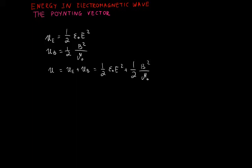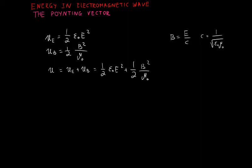We can simplify this by using the relationship between magnetic and electric fields, where B equals E over c, and c equals one over the square root of ε₀μ₀, where ε₀ is free-space permittivity and μ₀ is free-space permeability. We will also need one over c² equals ε₀μ₀.